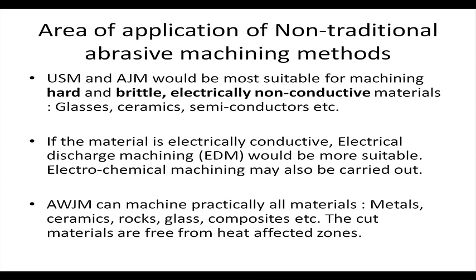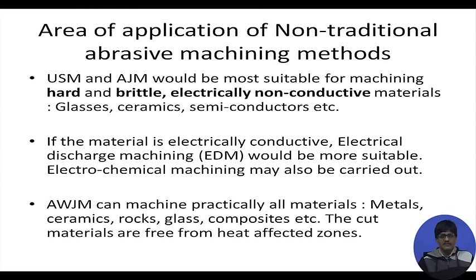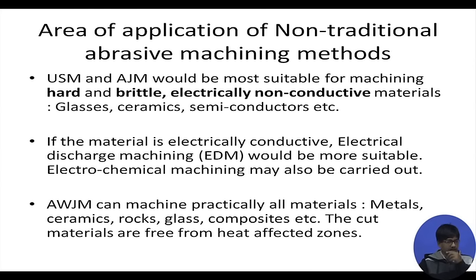USM and AJM are most suitable for machining hard, brittle, electrically non-conductive materials, while abrasive water jet machining can machine practically all materials. The reason USM and AJM are confined to hard brittle non-conductive materials is that if the material is electrically conductive, better options exist — such as electrical discharge machining or electrochemical machining.